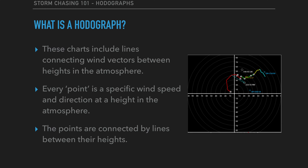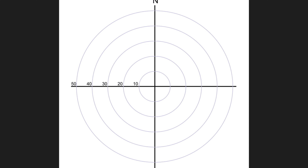So what is a hodograph? These charts include lines connecting wind vectors between heights in the atmosphere. To simplify it further: every point you see represents a specific wind speed and direction at a given height in the atmosphere — surface, 850mb, 700mb, whatever — and the lines connect those points. In the simplest sense, it's wind speeds and directions connected together on a chart with circles and lines. Hodographs are actually quite simple — don't be intimidated. Like the Skew-T, they're super simple to figure out.